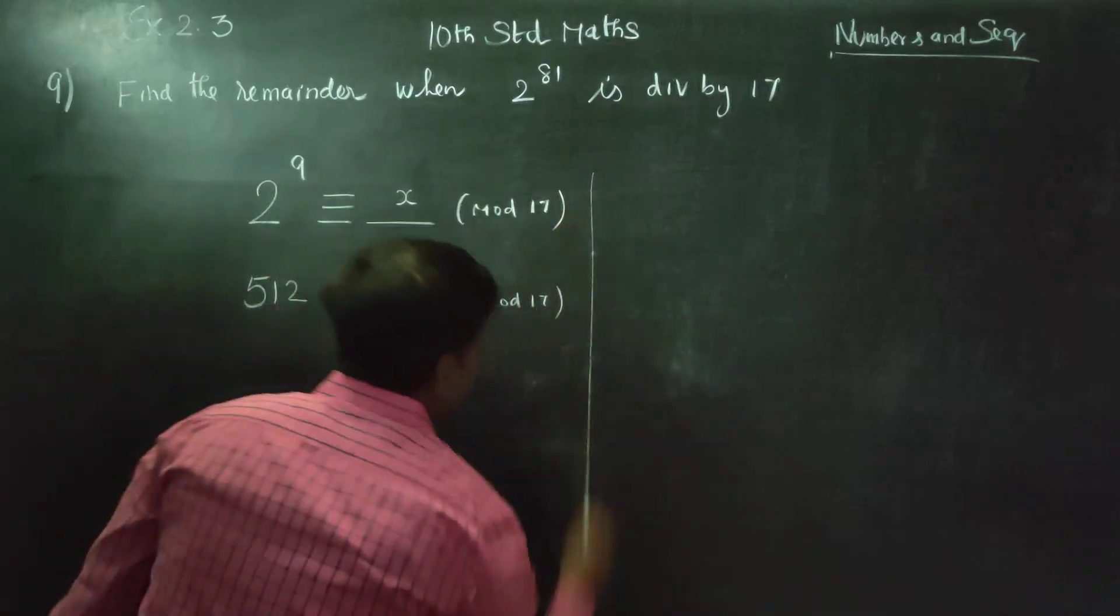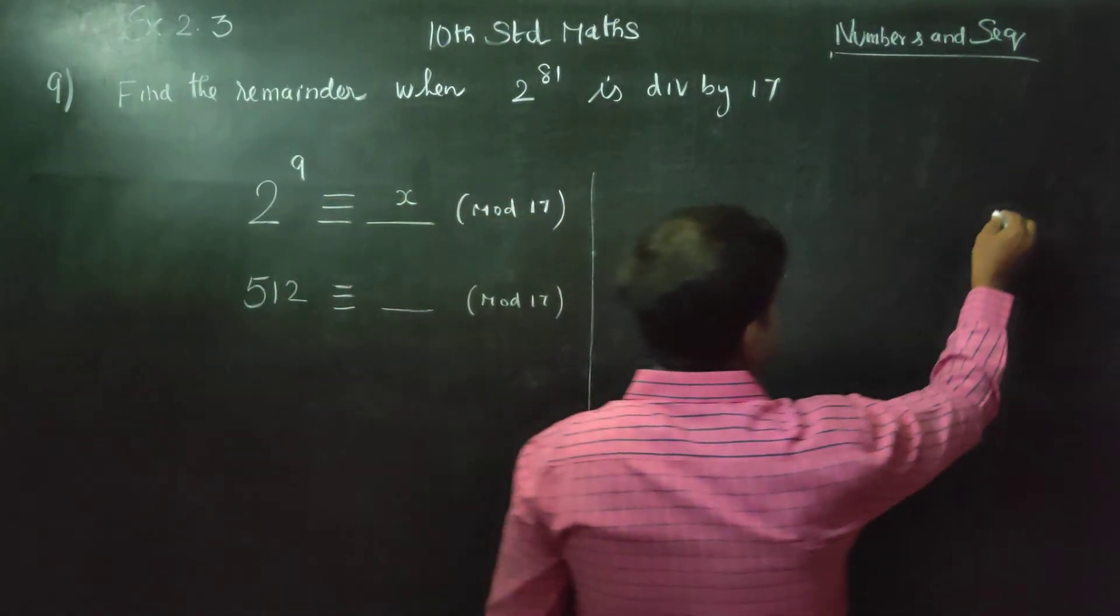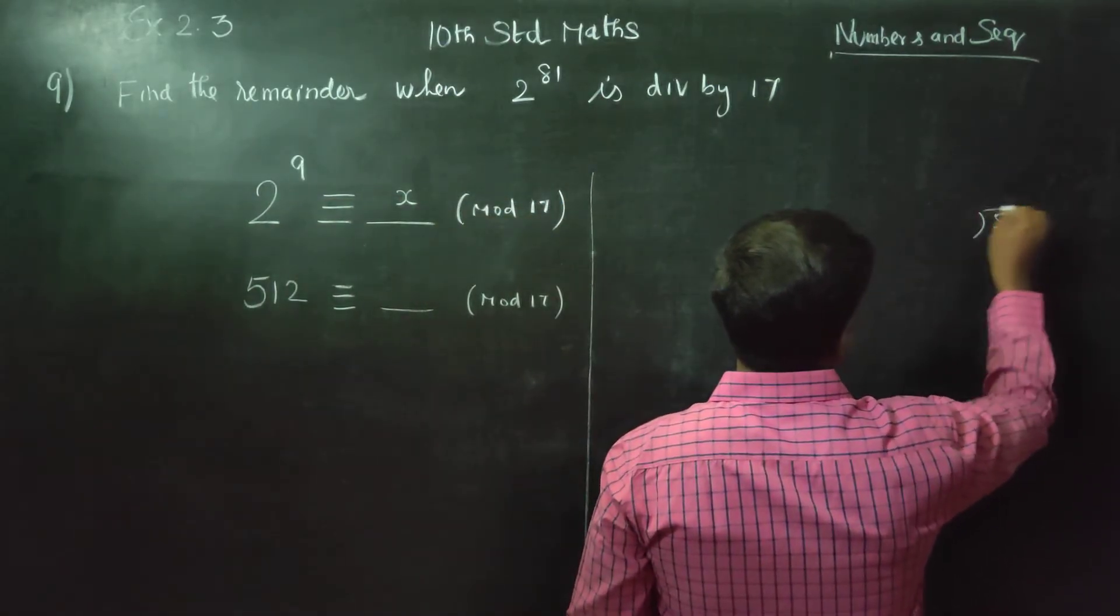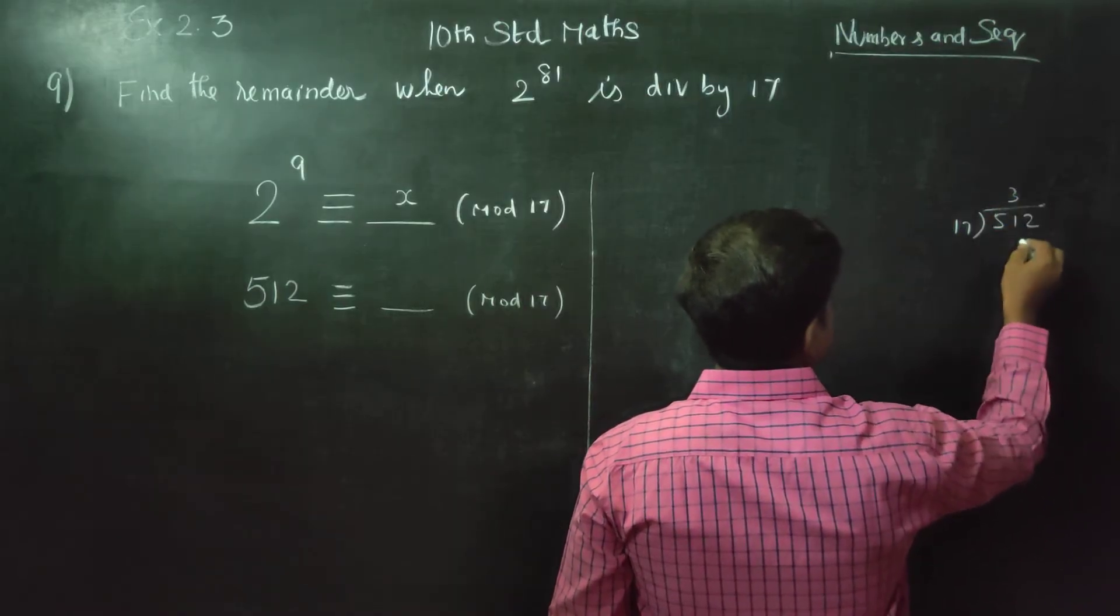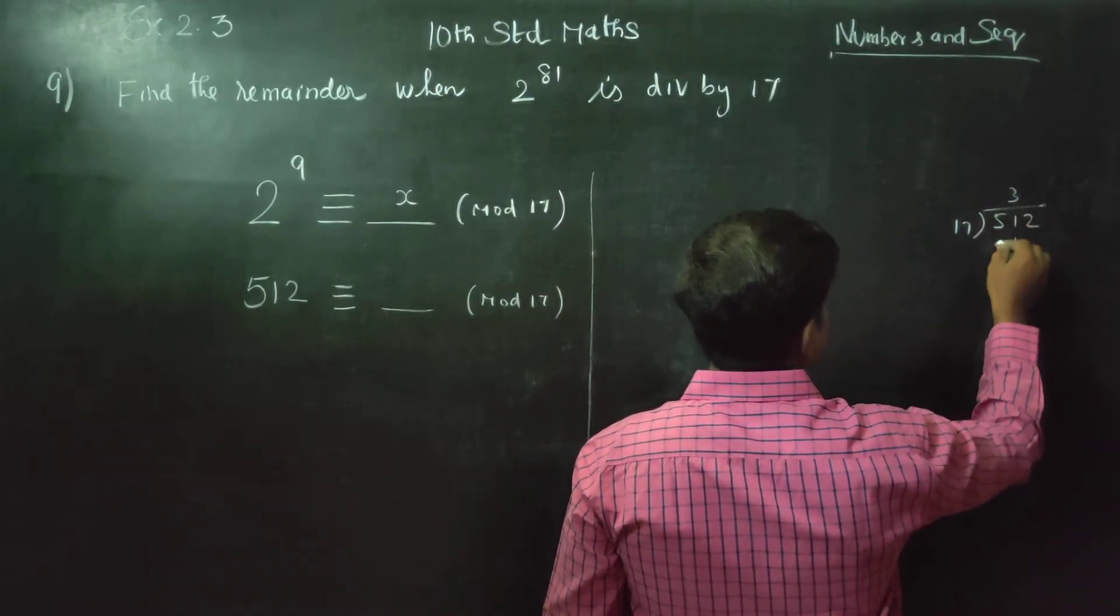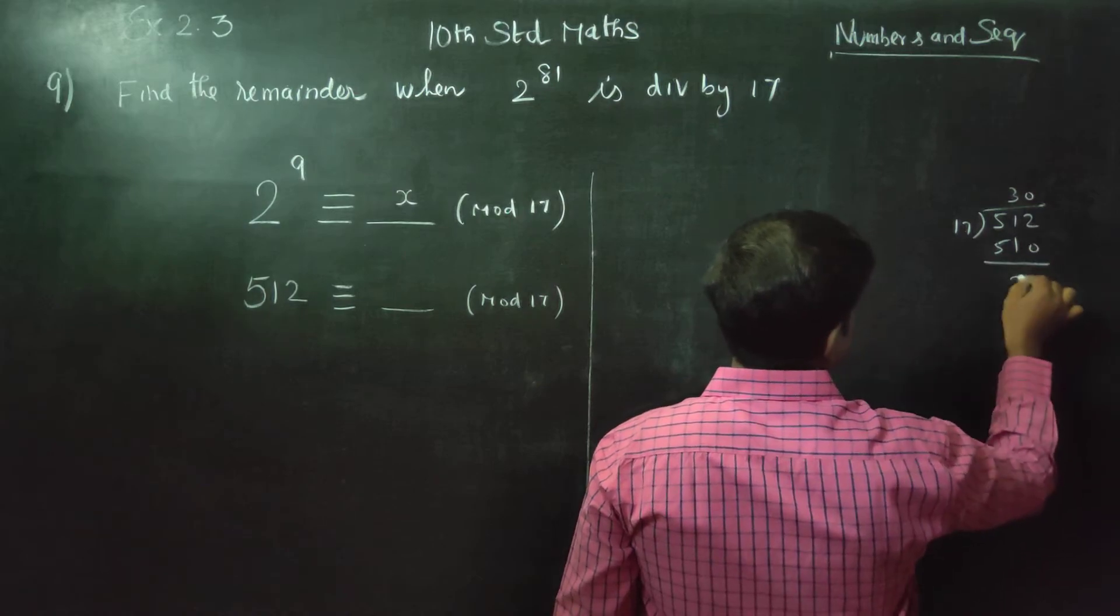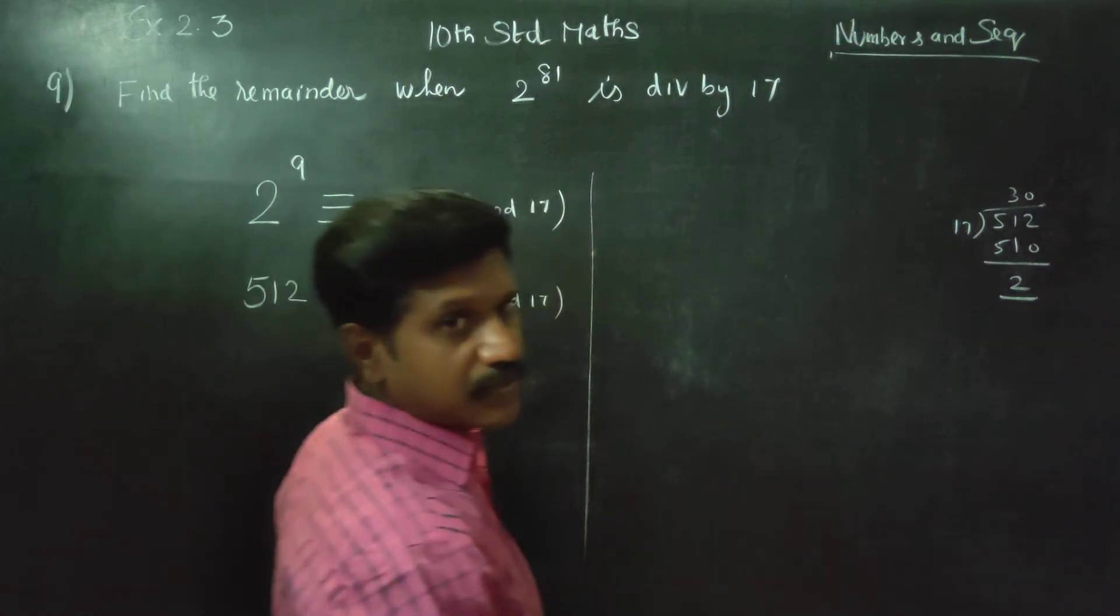Let's calculate the value. 512, divide by 17. 3, 7, 21, 3, 1, 3, 0. Zero times, balance 2. The balance is 2.